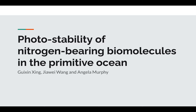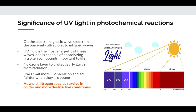So I know there's a lot of words in the title, so let's begin with the significance of UV light. What is UV light and why is it so important to nitrogen species? On the electromagnetic wave spectrum, the sun emits ultraviolet to infrared waves, as you can see in the diagram on the right. UV light is the most energetic of these waves and it's capable of photolyzing — aka destroying — nitrogen compounds which are important to life, like amino acids, RNA, proteins, things that are very important to forming life.